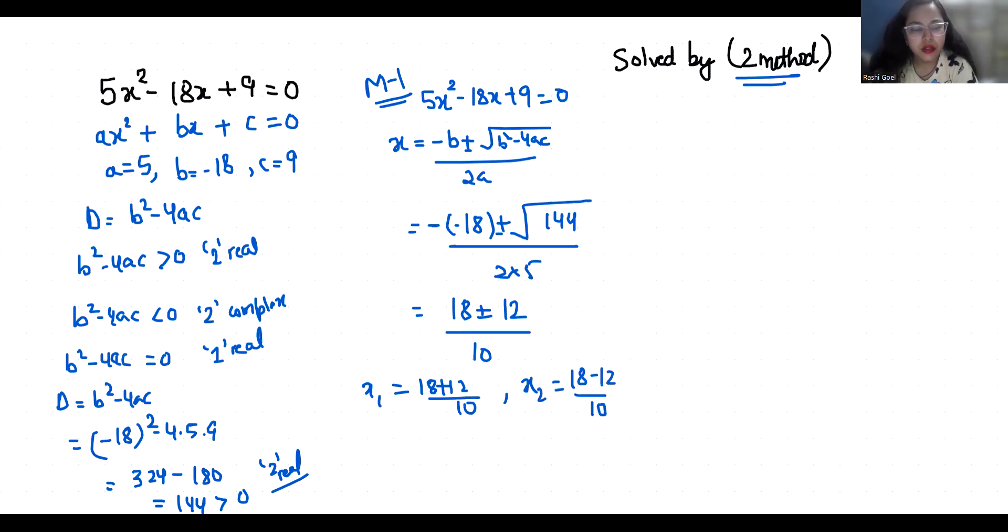So this becomes 30 by 10 which equals to 3, and x₂ is 6 by 10 which equals to 3 by 5. These are the two roots.